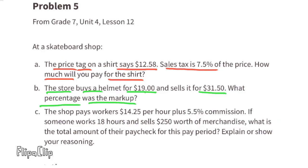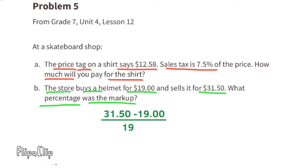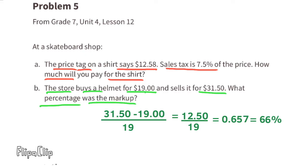Part b: The store buys a helmet for $19 and sells it for $31.50. What percentage was the markup? The markup is $31.50 minus $19, divided by $19 — the price they bought the helmet for. The markup was $12.50. Divide by 19 and you get 0.657, which as a percent is 65.7%, approximately 66%.